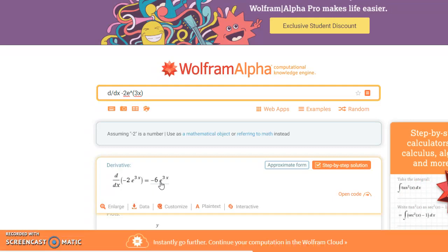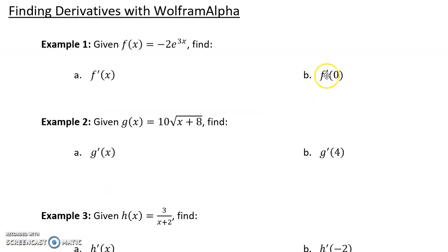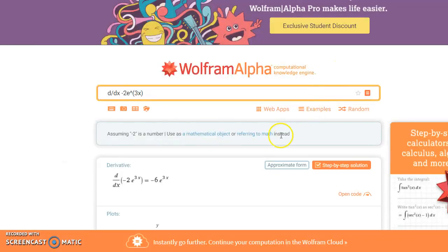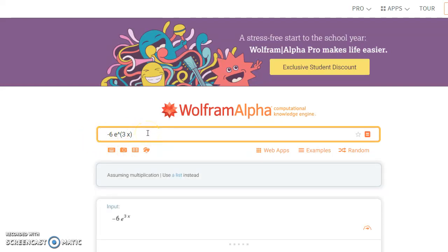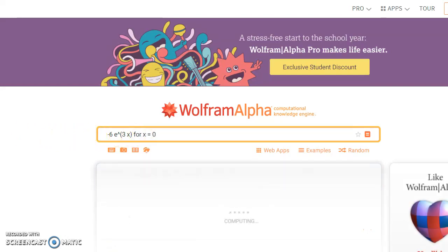Then what we want to do in part b is evaluate that derivative function for x equals 0. So what we can do is take a little bit of a shortcut and we can click on this output, which just saves us the trouble of having to type in that derivative. And we can evaluate that statement or evaluate that function for x equals 0. Which in this case would give us a result of negative 6.